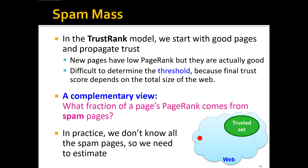To address these problems, a complementary approach is to look at what fraction of a page's PageRank score comes from spam pages. If this fraction is very small, we say it's a good page; otherwise it's a spam page. This also works for new pages because it looks at the fraction, not the total trust value. In practice, we don't know all the spam pages, so we may need to estimate.